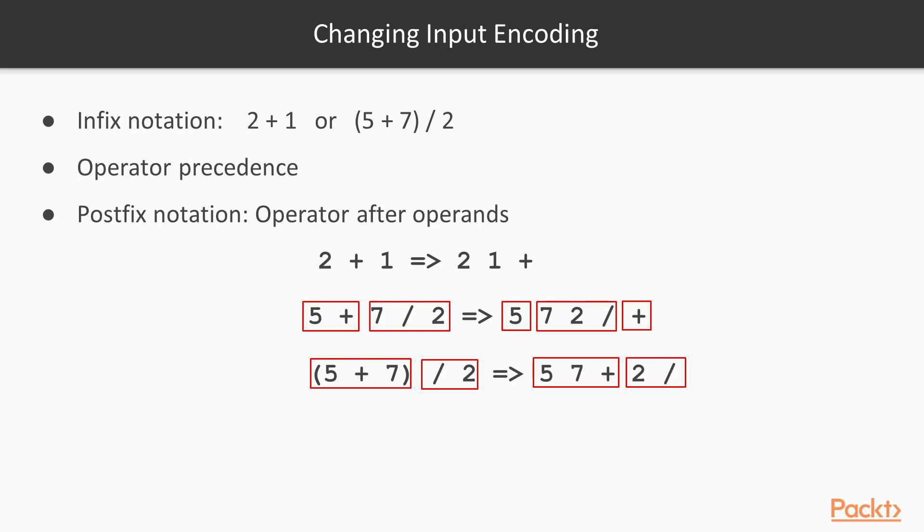Now we have something a bit more complex, where we should first compute the division and then the addition. So we start by doing 7 division by 2. In postfix, this is written by 7 2 division. Next, we do the addition, where the result is summed by a 5.